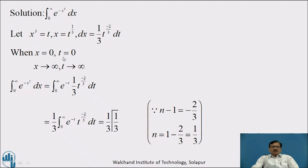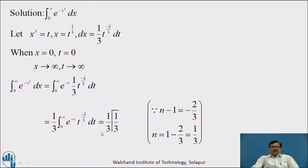Accordingly, we have to change the limits. When x equal to 0, we get t equal to 0, and when x tends to infinity, t tends to infinity. Therefore, the integration from 0 to infinity of e raised to minus x cube dx is equal to integration from 0 to infinity of e raised to minus t into 1 by 3 t raised to minus 2 by 3 dt, which is equal to 1 by 3 integration from 0 to infinity of e raised to minus t into t raised to minus 2 by 3 dt, which equals 1 by 3 Gamma of 1 by 3.